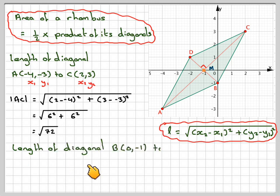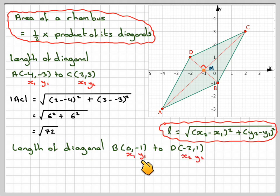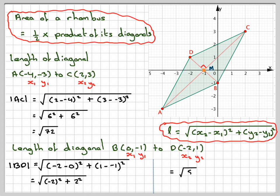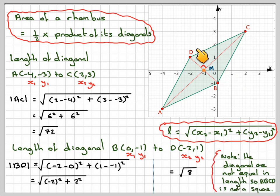The length of diagonal BD, from B(0, −1) to D(−2, 1), putting in X1, Y1, X2, Y2, gives √((−2 − 0)² + (1 − (−1))²) = √((−2)² + 2²) = √(4 + 4) = √8. Note that these two diagonal lengths are different, so the diagonals are not equal in length — therefore this cannot also be a square.